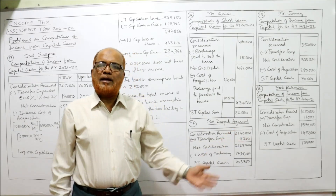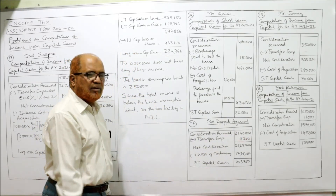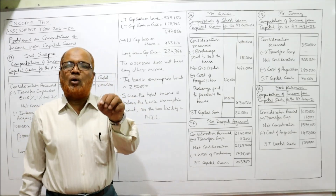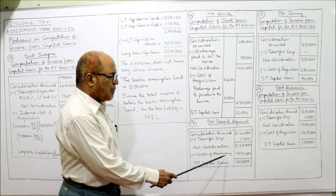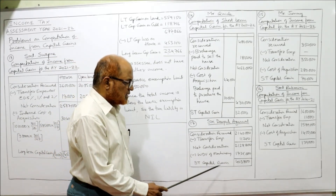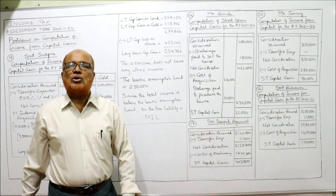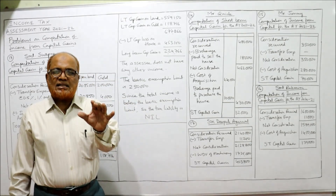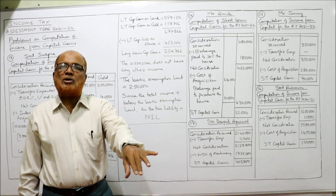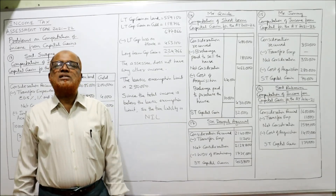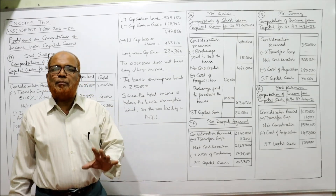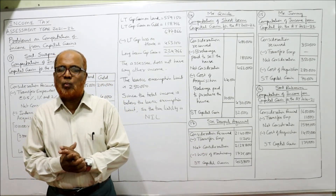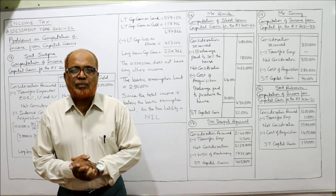For Deepak Agarwal's computation: consideration received = 21,40,000. Deduct transfer expenses 11,200 to get net consideration. Deduct written down value (WDV) of machinery 17,25,000. Short-term capital gain = 4,03,800. After completing the solution, write a note: according to the provisions of the Income Tax Act, any asset used in business which is a depreciable asset will always give rise to a short-term capital gain, irrespective of the period of holding. This completes all 17 problems under the head of capital gain.